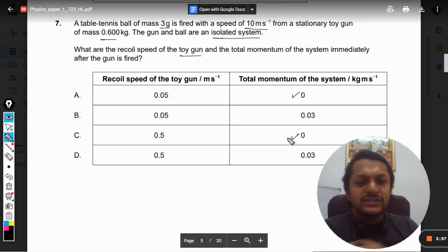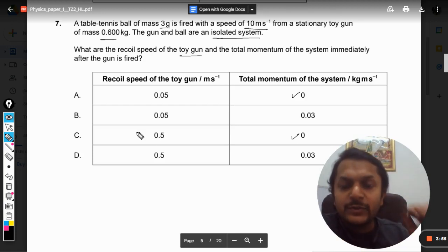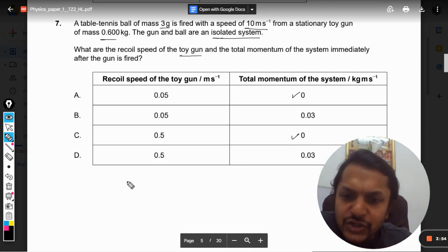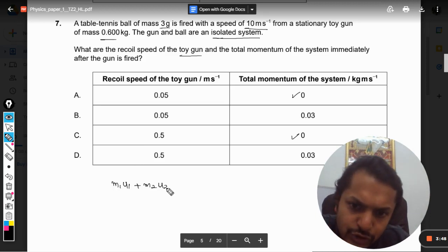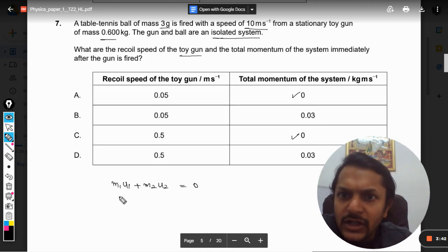Now we are going to the second part of the question, that is the recoil speed of the toy gun. So what is the total momentum? Now I will say m1*u1 plus m2*u2, and it will be equal to zero because initially the momentum was zero.